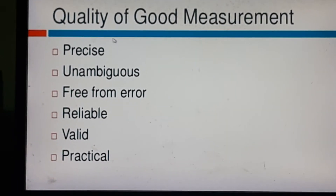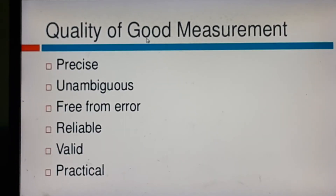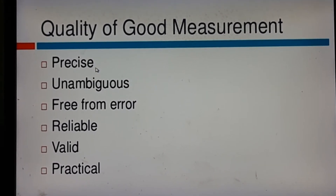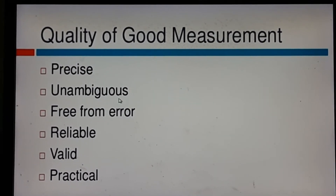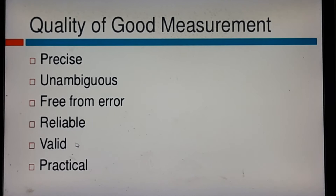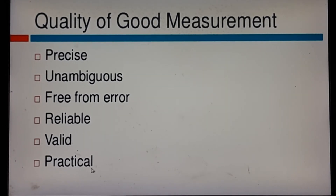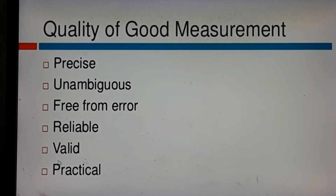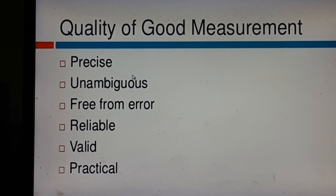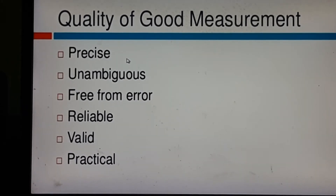Now we shall discuss the quality or characteristics of a good measurement. The characteristics of good measurement are: measurement is precise, measurement is unambiguous, measurement is free from error, measurement is reliable, measurement is valid, and measurement is practical. If these characteristics are present in a measurement, then we can say that it is a quality measurement instrument.